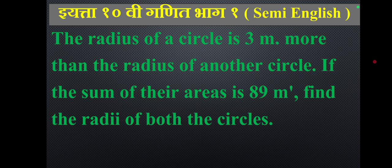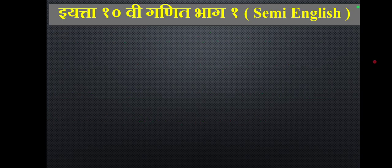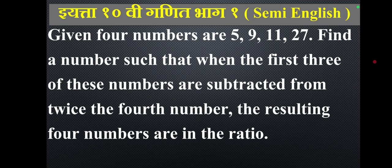Given four numbers 5, 9, 11, and 27, find a number such that when the first three of these numbers are subtracted from twice the fourth number, the resulting four numbers are in proportion.